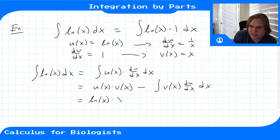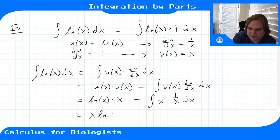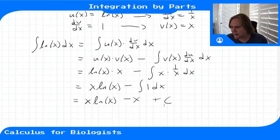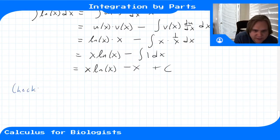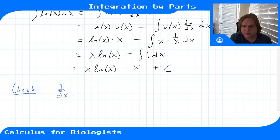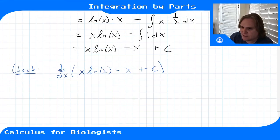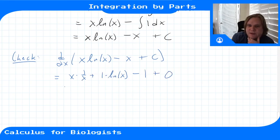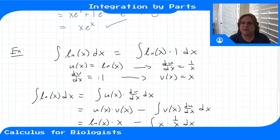Applying integration by parts: u(x)·v(x) minus integral of v(x)·du/dx, plugging in gives ln(x)·x minus the integral of x·(1/x) dx. That simplifies to x·ln(x) minus the integral of 1, giving x·ln(x) minus x plus C. Checking by taking the derivative: applying the product rule gives x·(1/x) plus 1·ln(x) minus 1, which is 1 plus ln(x) minus 1 = ln(x) — confirming the answer.